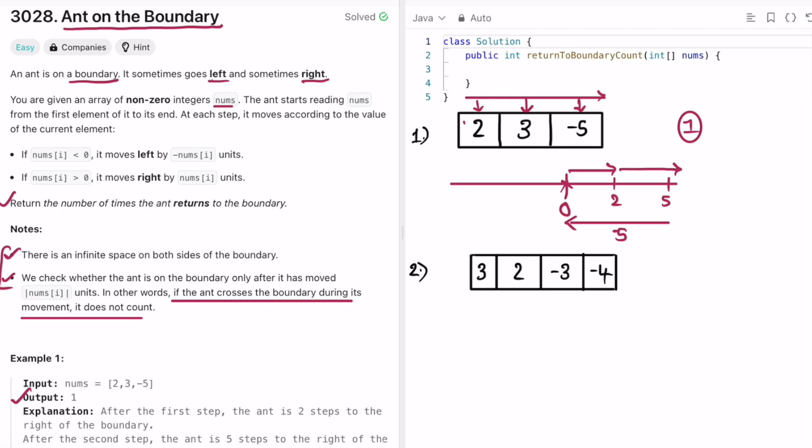Now let's take the second example. Let's draw this number line because the boundary is zero. We start at zero. It goes three steps to the right. So it's at three now and it goes two steps to the right again. So it's at five now.